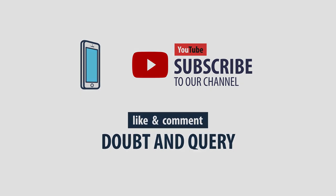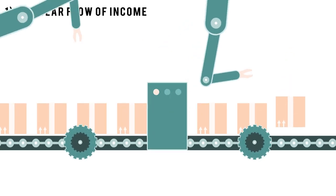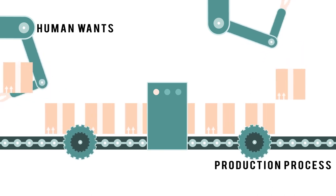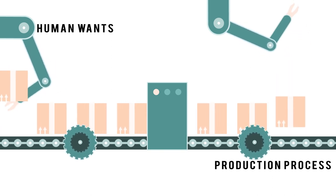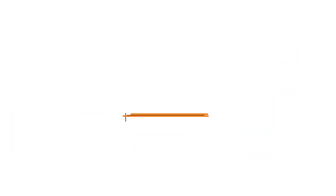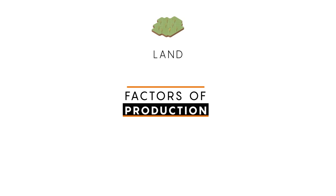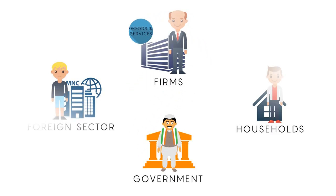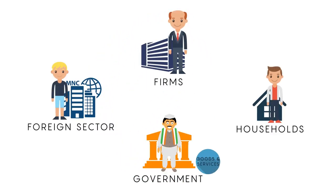The unlimited and recurring wants of human beings have made the production process a continuous process. In this process, different factors of production — such as land, labor, capital, and entrepreneurship — are combined together for the production of goods and services, which flow between various sectors of an economy in a circular flow.